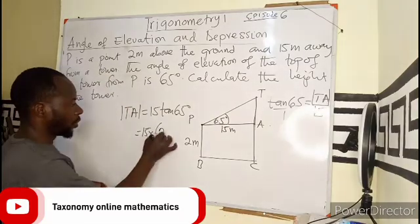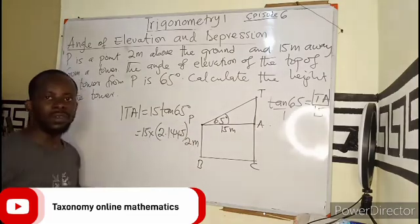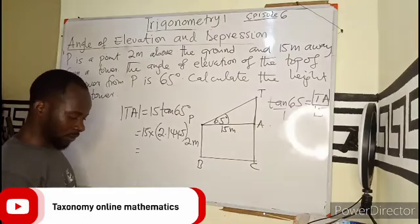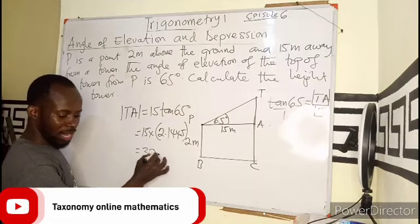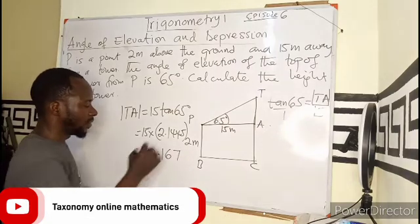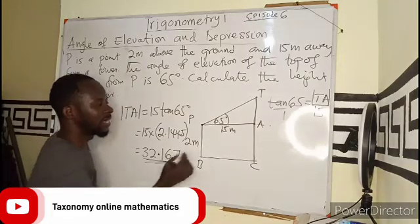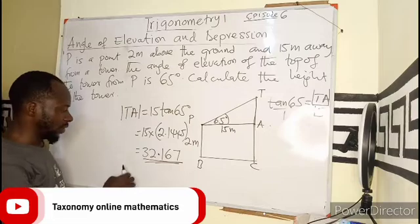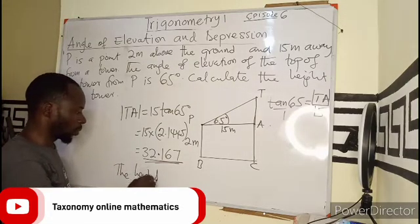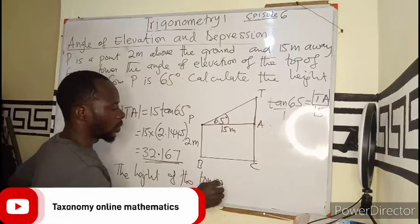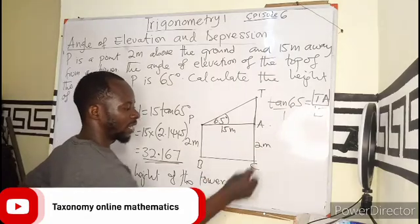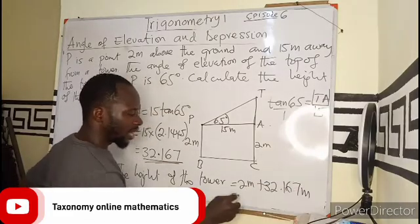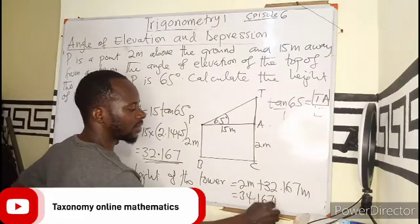So 15 times tan(65°) gives us — tan(65°) is approximately 2.1445 — so 15 times 2.1445 gives us approximately 32.167. So this is going to be the measurement from here to here. But we are looking for the height of the tower. The height of the tower is going to be 2 meters plus 32.167 meters, and that will give us 34.167 meters.